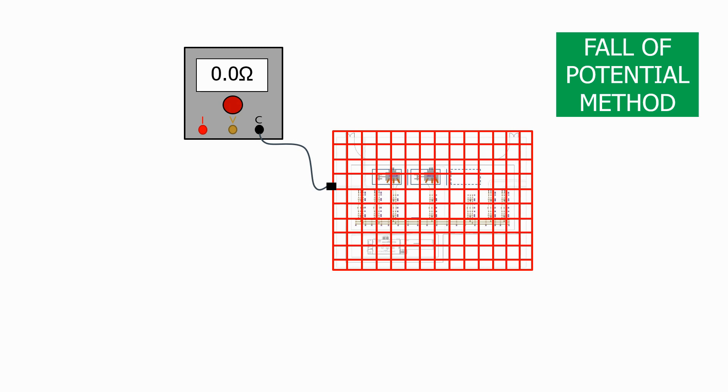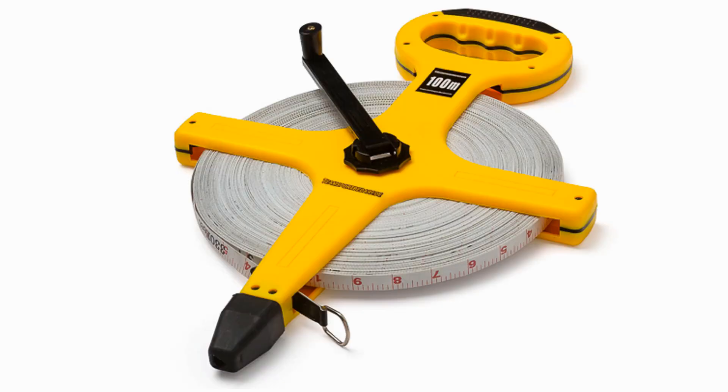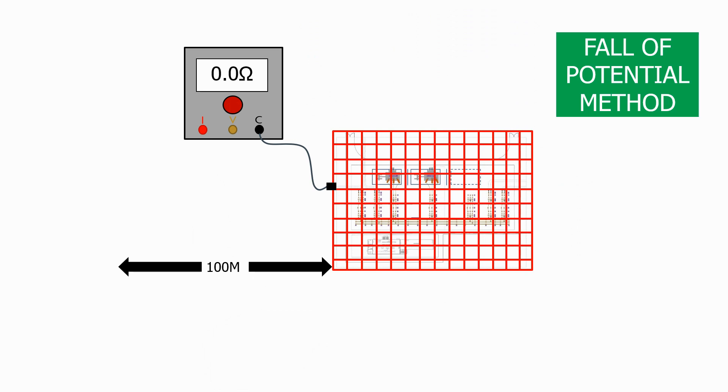We then get an extendable measuring tape and walk off in a straight direction for approximately 100m and then leave the tape on the ground as we will need it for measuring purposes. At this point we then install a copper rod, attach a probe and run a long wire back to the resistance meter in the substation and connect it to the current terminal of the meter.